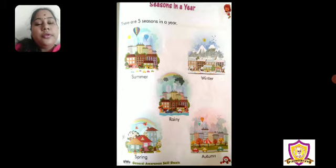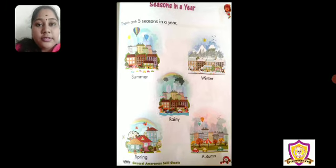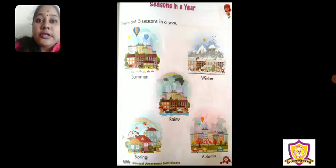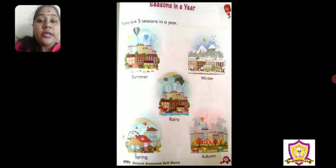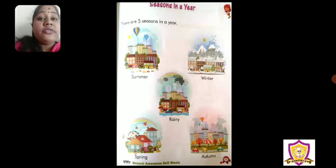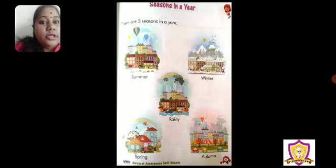Now children, when you stay in your home, you will feel warm — that is due to the temperature. We say this is a warm season or a cold season. In our full year, there are 5 seasons total. How many seasons are there? 5 seasons.